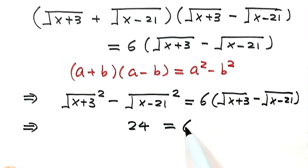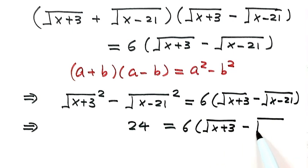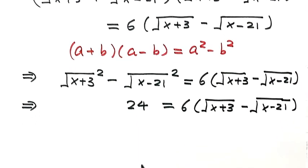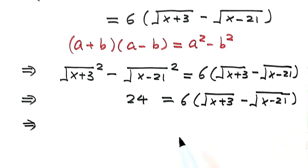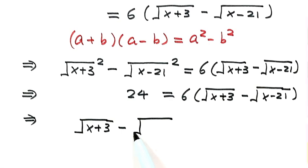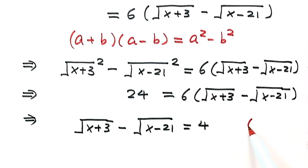Then the right hand side is 6 times the quantity: square root of x plus 3, minus square root of x minus 21. Both sides divided by 6 gives us: square root of x plus 3, minus square root of x minus 21, equals 4. Let's label this as equation 2.